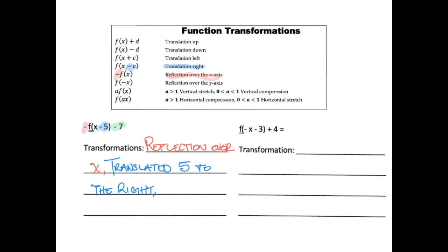We still have one more transformation: the minus seven, which is subtracting from the whole function. When I subtract from the whole function, the line will move down — translated down by seven.